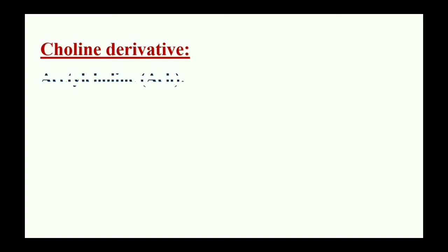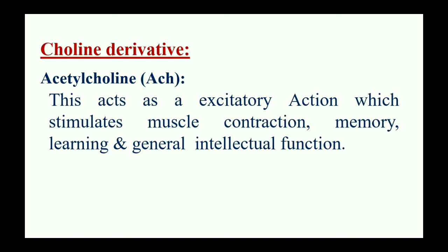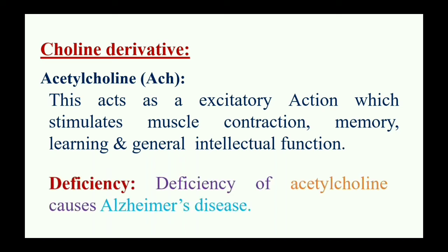Choline derivatives — example: acetylcholine. Acetylcholine is an example of a choline derivative. It acts as an excitatory neurotransmitter which stimulates muscle contraction, memory and learning, and general intellectual function. Deficiency of acetylcholine causes Alzheimer's disease.